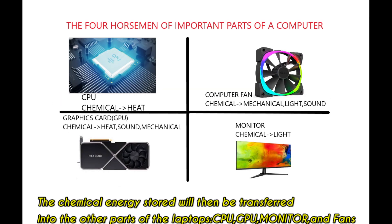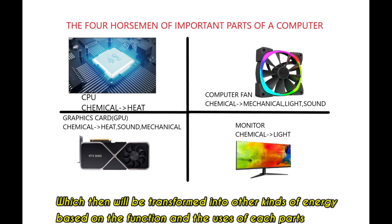This energy is then transformed into chemical energy. The chemical energy stored inside the battery is transferred to other parts of the laptop — such as the CPU, GPU, monitor, or fan — where it is transformed into other kinds of energy based on each part's function and use.